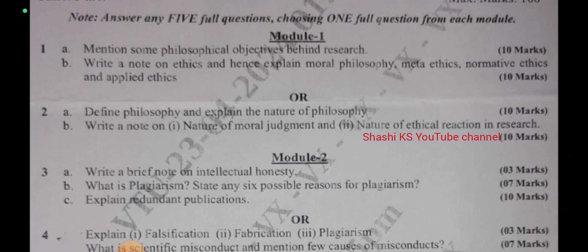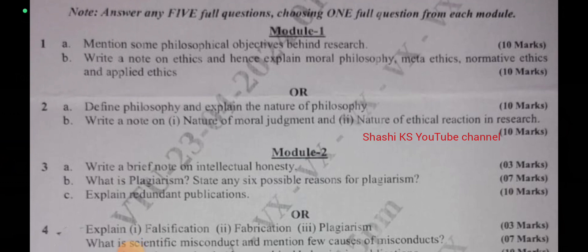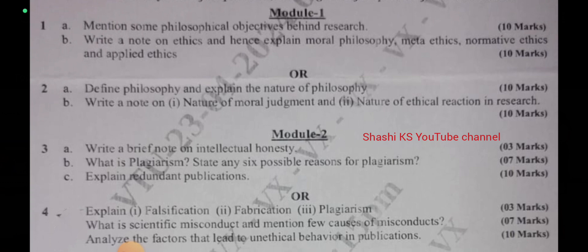Continuing Module 2: what is scientific misconduct and mention a few causes of misconduct — asked for 7 marks. Analyze the factors that lead to unethical behavior in publications — asked for 10 marks.